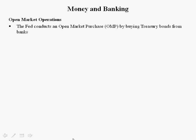Open market operations is the primary tool of the Fed. There are two types of open market operations: the open market purchase and the open market sale. Both of these occur in the secondary market.